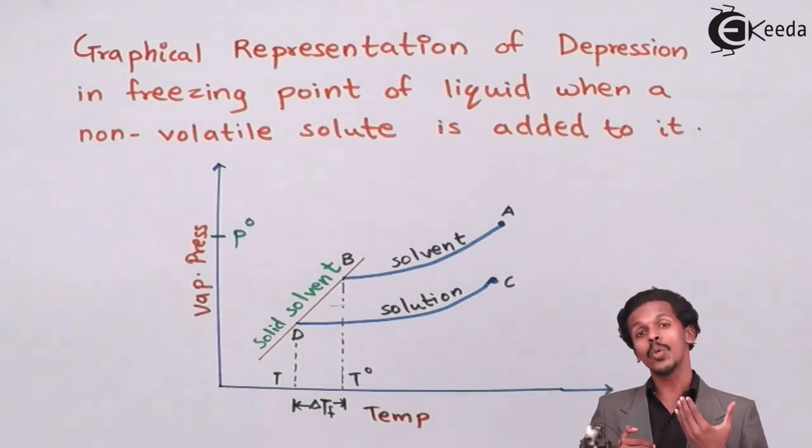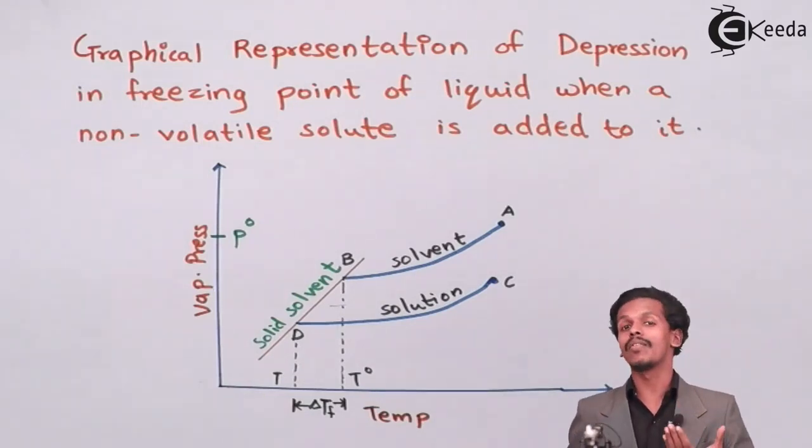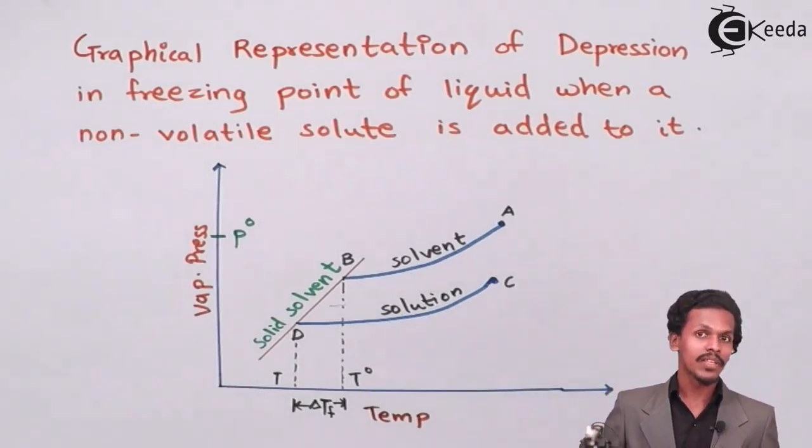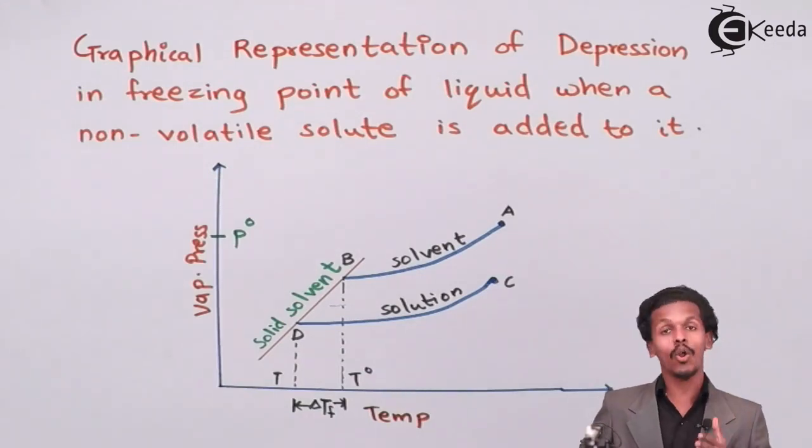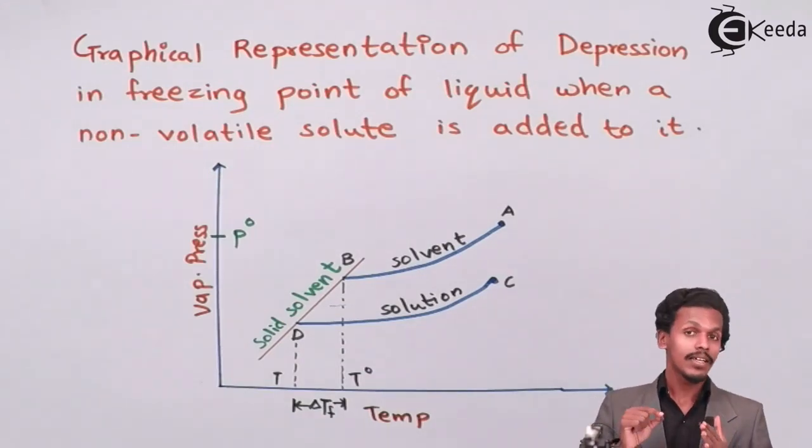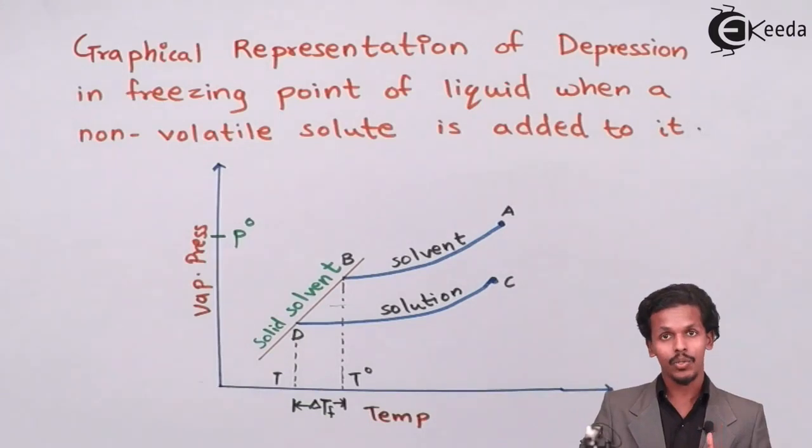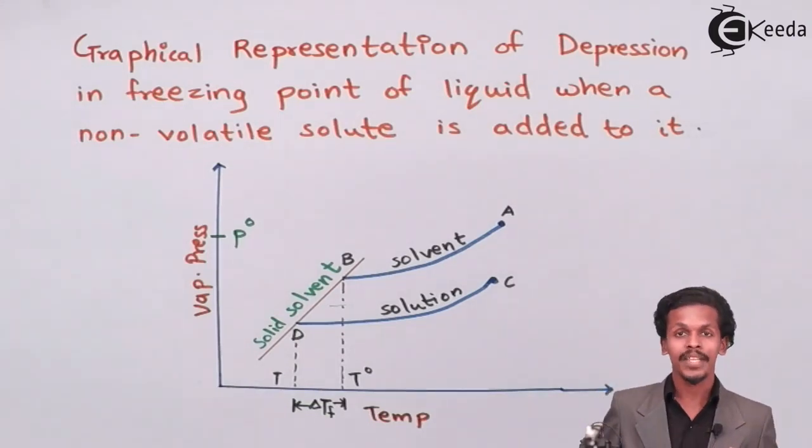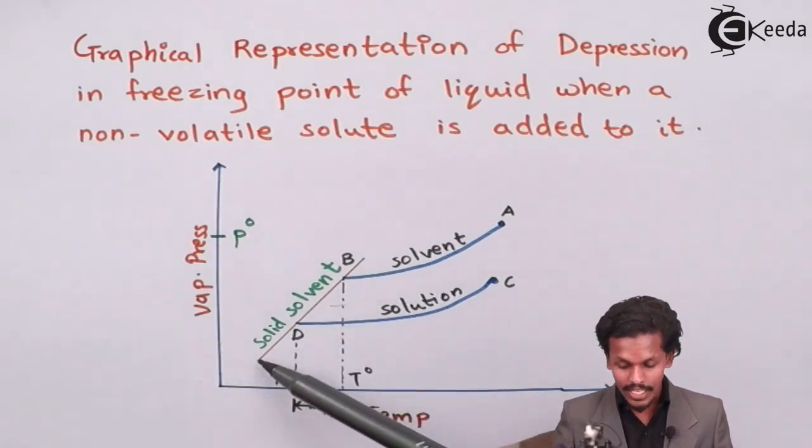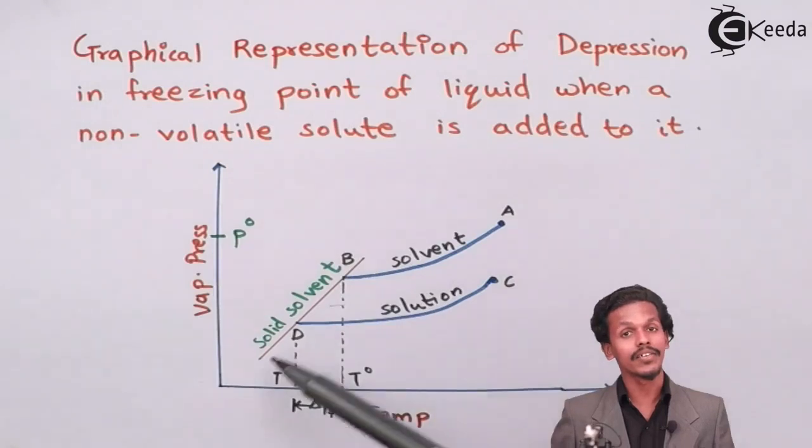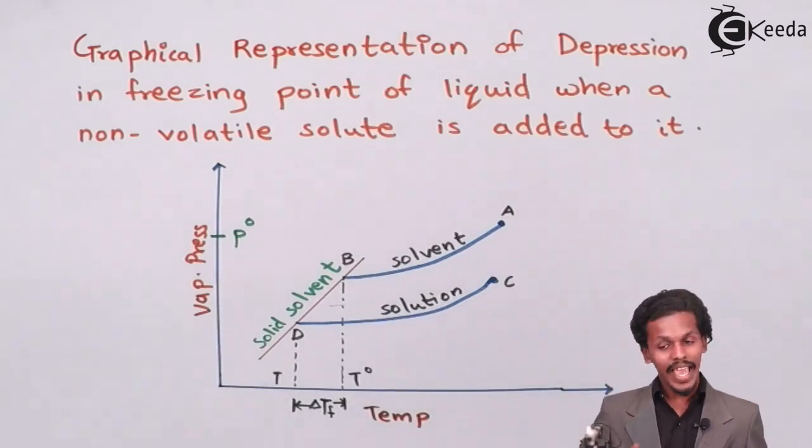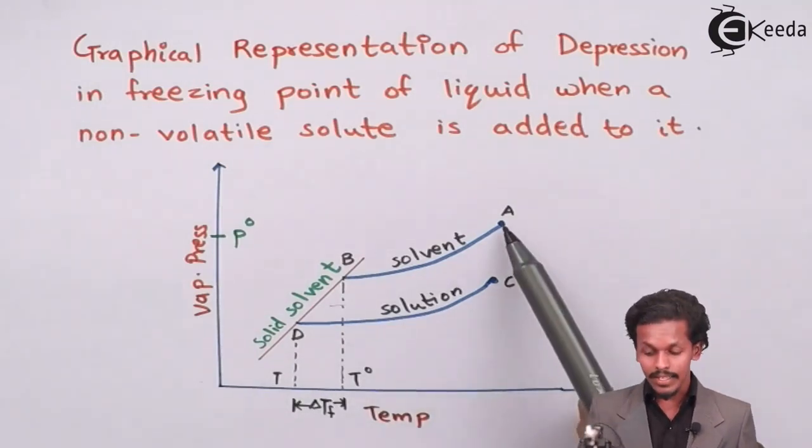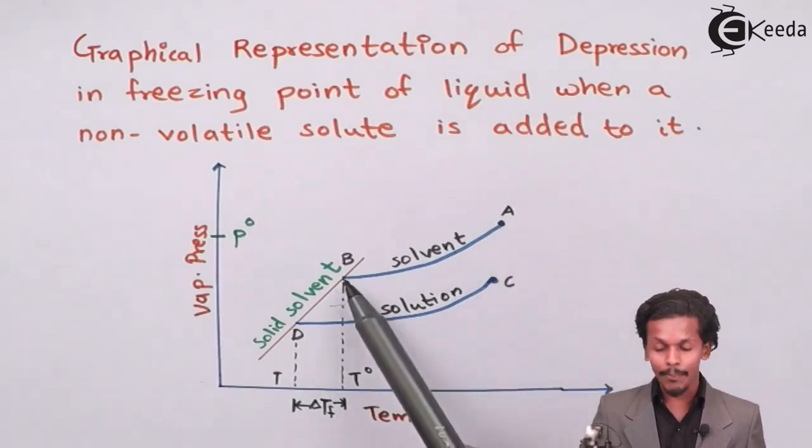So what is the benchmark or what is the point that we should reach to convert a liquid into a solid? That criteria or that benchmark is nothing but this solid solvent curve. We have to make curve A reach at point B so that the pure solvent will now be converted into a solid.